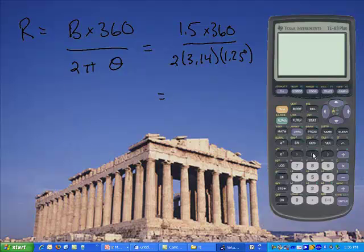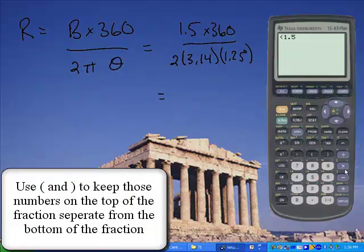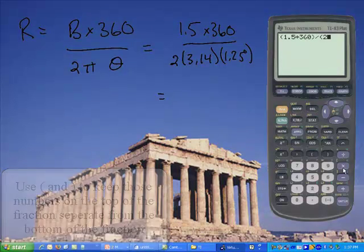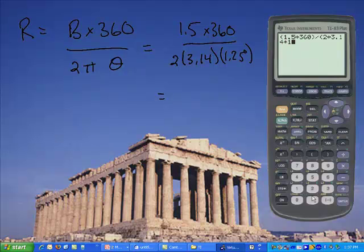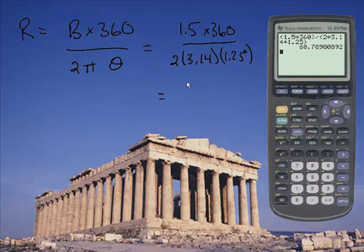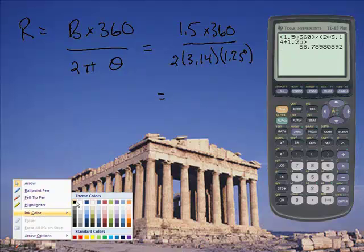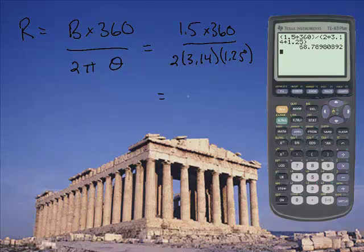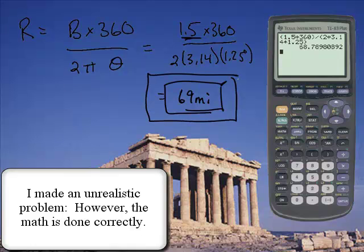I'm going to use parentheses: 1.5 times 360, divided by 2 times 3.14 times 1.25. The answer comes out to about 69 miles. My example is not a very good one because the unit was 1.5 miles, so the mountain would be 69 miles tall — Mount Everest is only about 6 miles tall, so this is not a very acceptable problem. But that's the idea; you would do the math the same way. I should have thought through my mathematics.